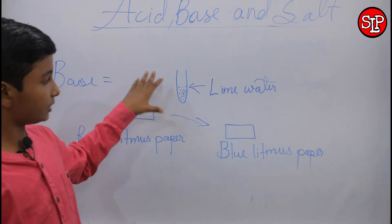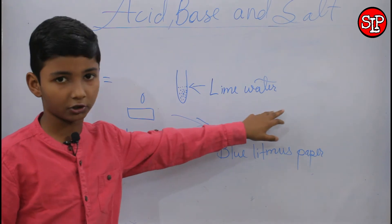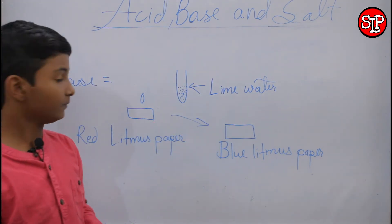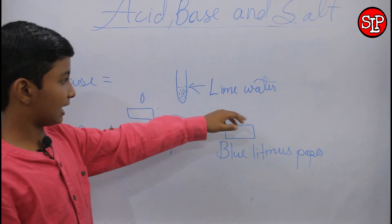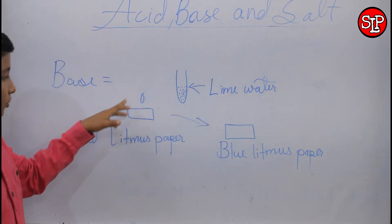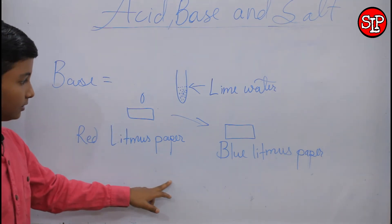So in this example we will prove that lime water is a base, not acid. For this you will take a test tube in which lime water is kept and drop it with a dropper on red litmus paper.